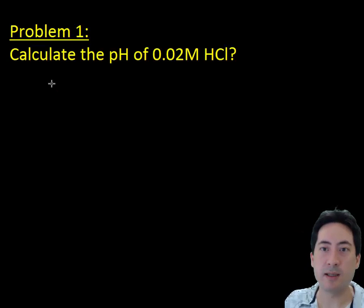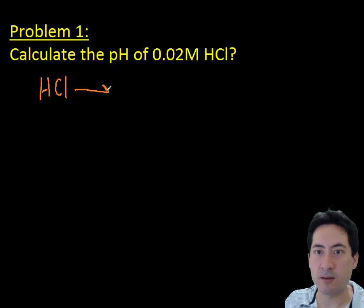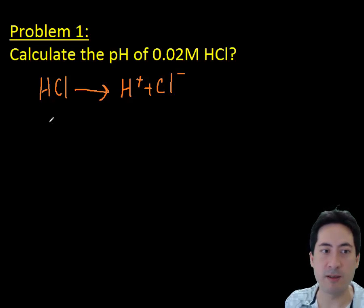Working through some problems now. Calculate the pH of 0.2 molar hydrochloric acid. First, you write out the equation and make sure it completely dissociates. If it's in equilibrium, that's a little bit more difficult; we need to use pK values.